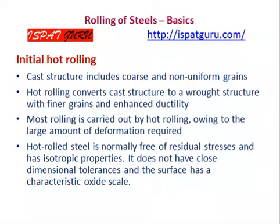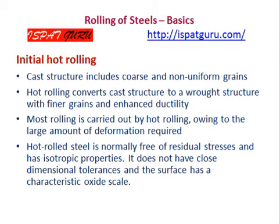Most rolling is started by hot rolling, owing to the large amount of deformation needed. Hot rolled steel is normally free of residual stresses and has isotropic properties. It does not have close dimensional tolerances, and the surface has a typical oxide scale.